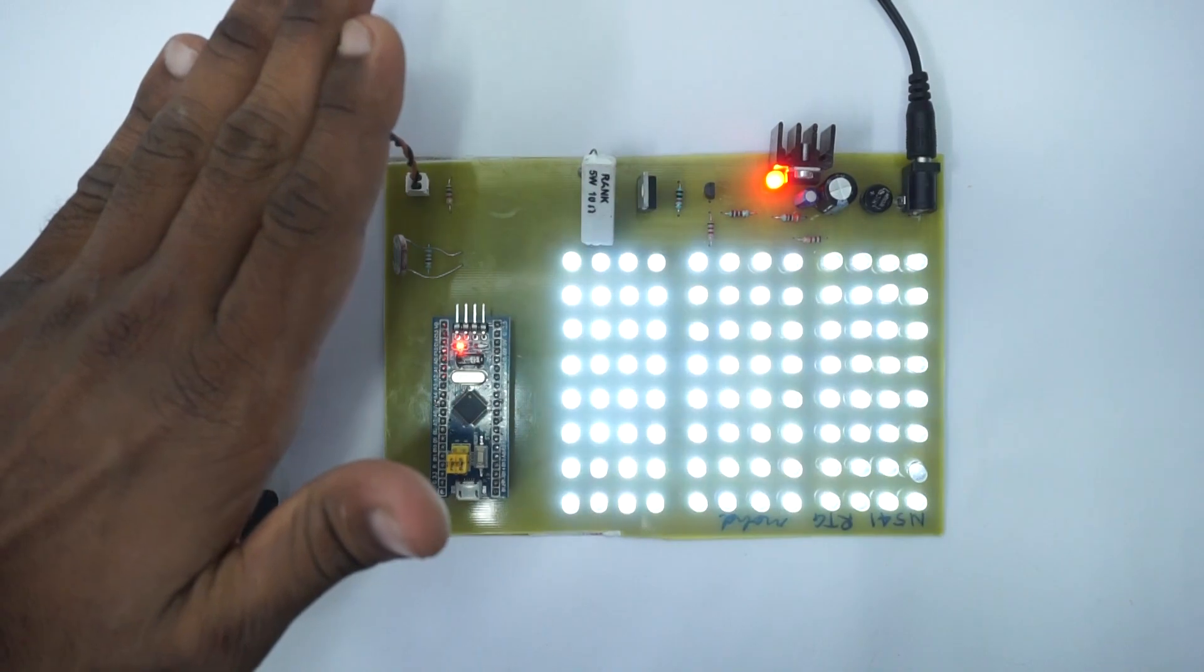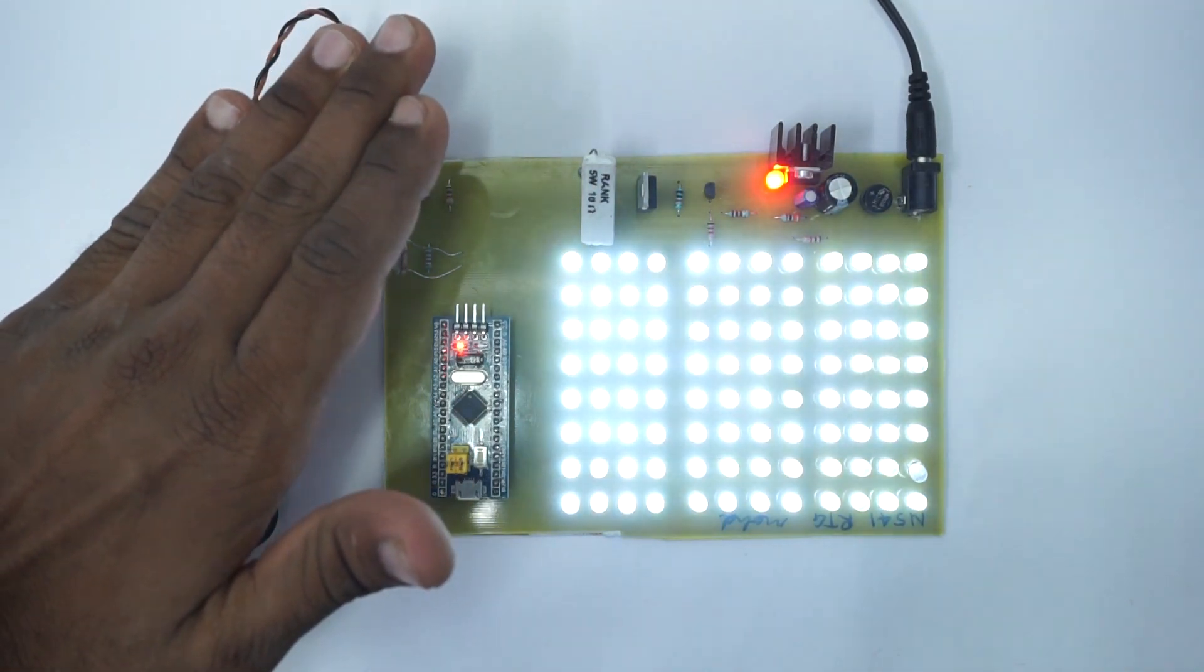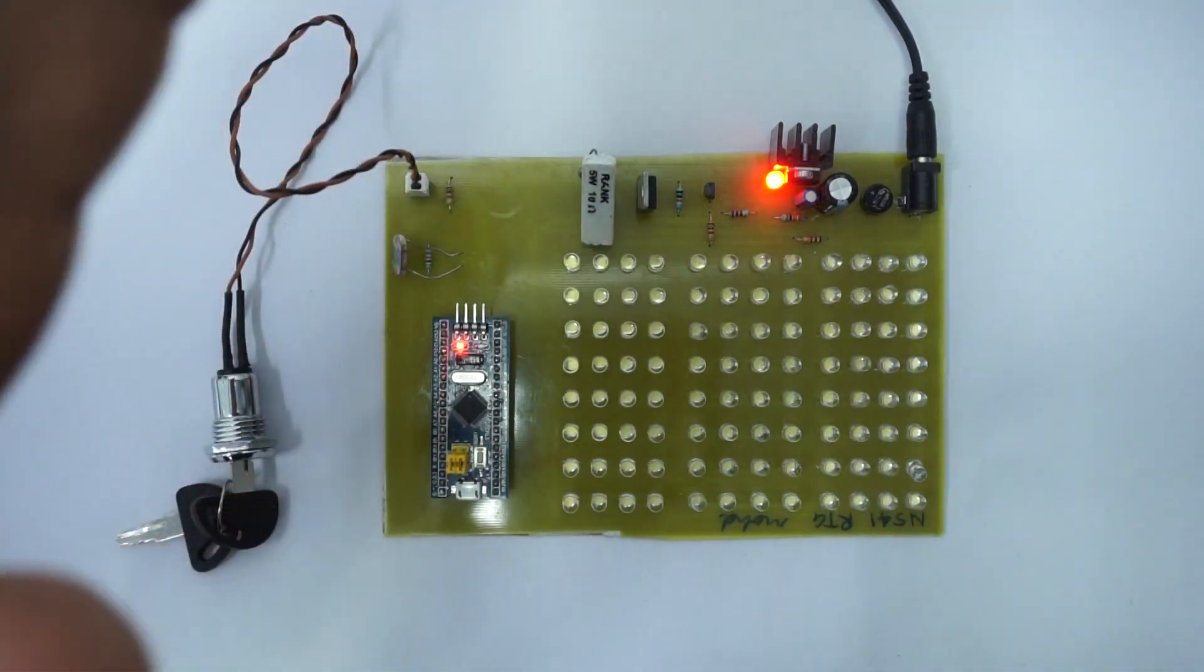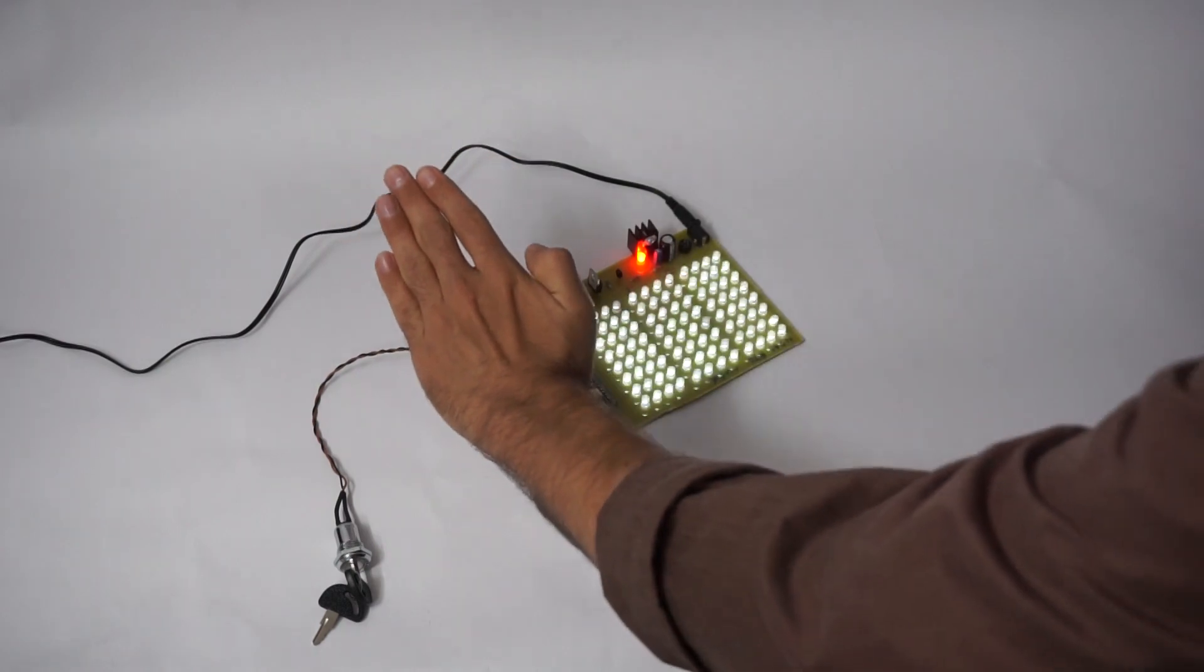By using our hands, let's simulate darkness over the LDR sensor. If the lighting is below a certain threshold, the system starts the LED panel.